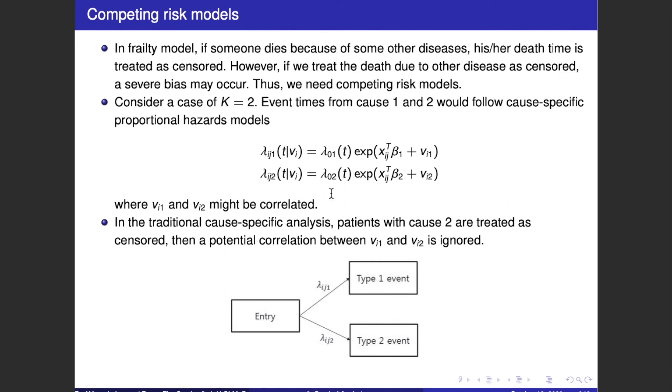Where the V_i here might be correlated. In line with this, in the traditional cause-specific analysis, patients with cause 2 are treated as censored. Then, a potential correlation between V_i1 and V_i2 is ignored. This is represented by these figures. The entry for lambda_ig1 for type 1 event and lambda_ig2 for type 2 event.